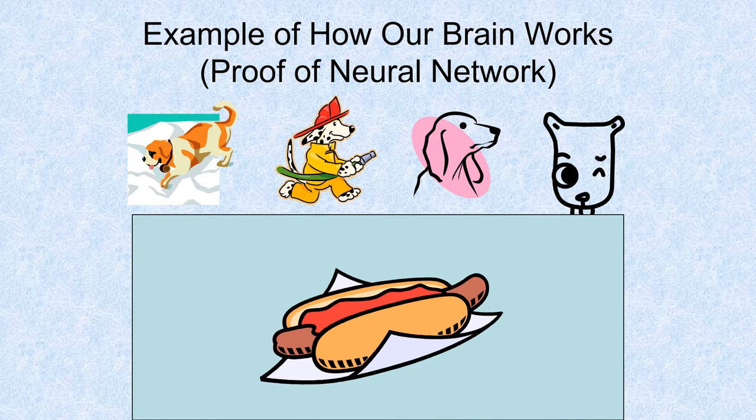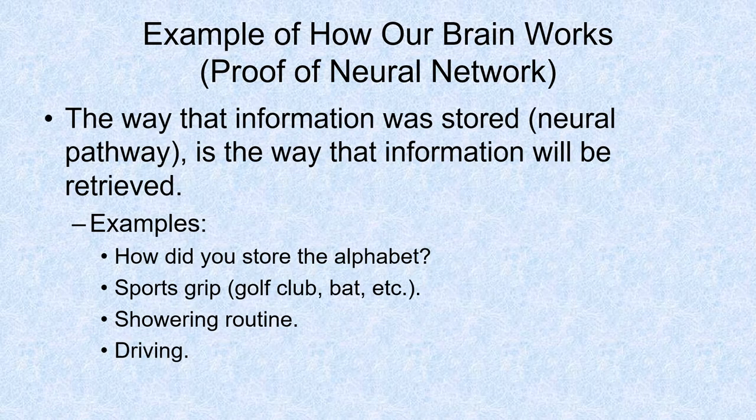This is also a dog — a hot dog. The way that information is stored in the brain during learning, known as our neural pathway, is also the way that information will be retrieved. Think about how you learned the alphabet. Did you sing a song? Many Americans sing A, B, C, D, E, F, G. We sing the alphabet in chronological order from A through Z. If I were to ask you what comes before M or what comes before X, do you find yourself kind of singing the song and running that sequence, going back a couple of letters to the next logical point and then running it forward?